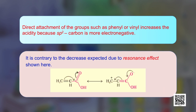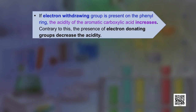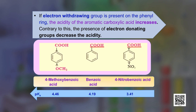For aromatic carboxylic acids, electron-withdrawing groups on the phenyl ring increase acidity, while electron-donating groups decrease it. For example, methoxy-substituted benzoic acid has a higher pK_a (lower acidity) than benzoic acid, while 4-nitrobenzoic acid has a lower pK_a (higher acidity) than benzoic acid.